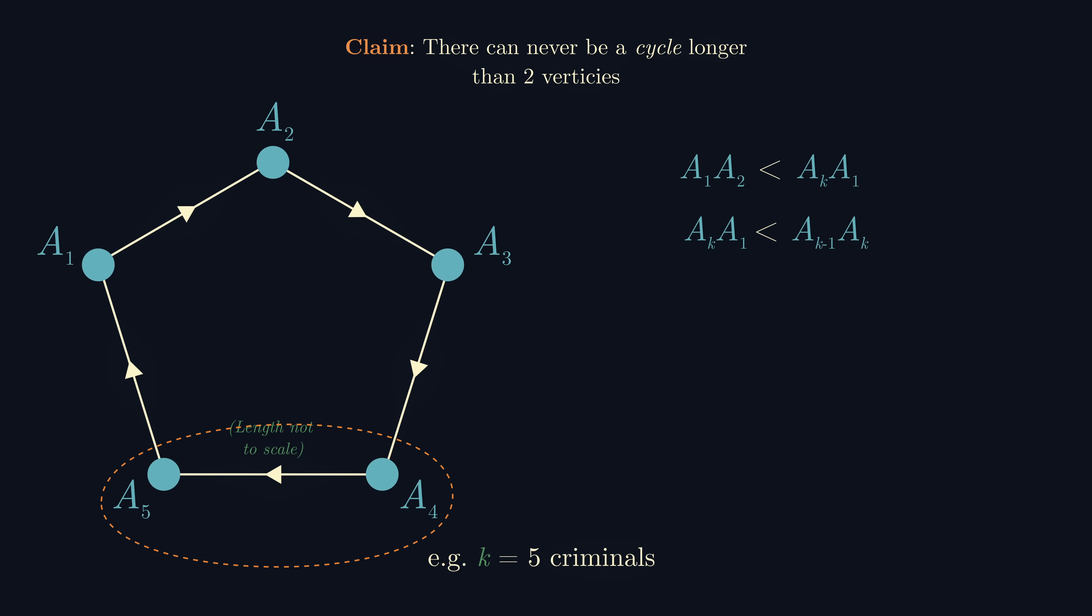We can keep repeating this around the entire cycle going backwards to obtain the following inequality. But look at the two ends of our inequality: we're saying that a1a2 is less than a1a2, which is nonsense and is exactly the contradiction we were looking for.